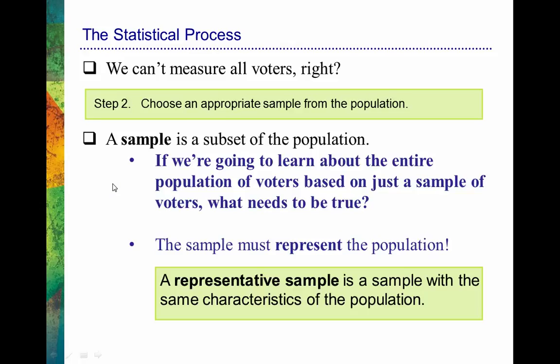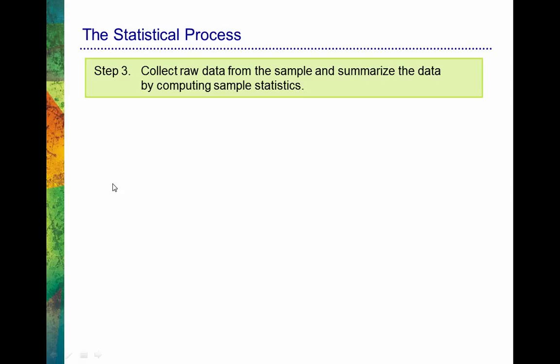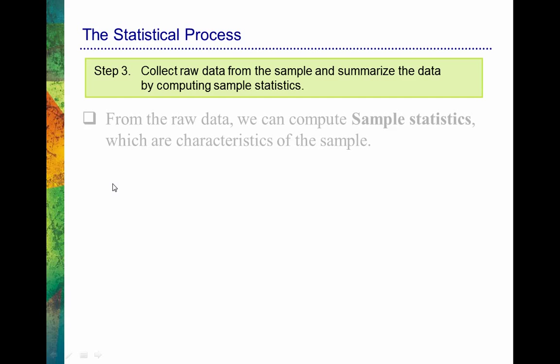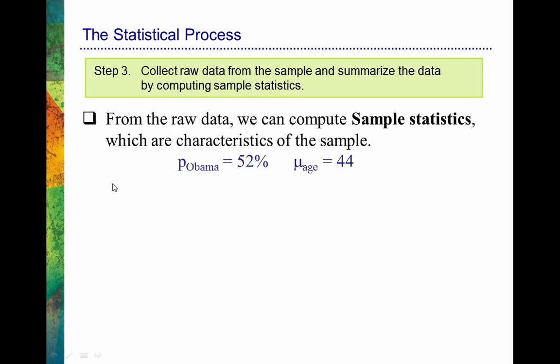For example, we said the population had an average age of about 44 — our sample should also have an average age of about 44. If the population of voters consists of 55% women, we'd want our sample to have about 55% women. Now step three: we collect raw data from that sample and summarize it by computing sample statistics. From that raw data, I might find that the sample proportion of people who said they were going to vote for Obama is 51%. The little caret (^) on top of the P represents a sample proportion.